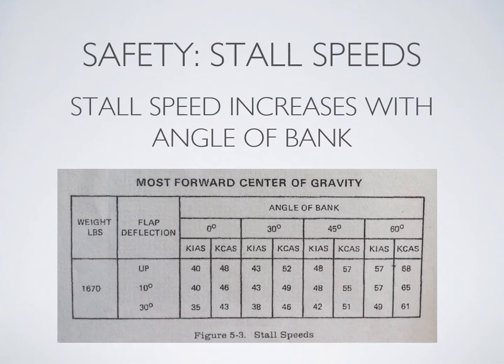Due to increased wing loading, your stall speed will increase disproportionately with your angle of bank. You can see this from the chart in the C152 POH — the stall speed increases by 3 knots in a 30-degree bank, but at a 60-degree bank angle, the stall speed is 40% higher than the level stall speed. For a more detailed review, see exercise 9 in the flight training manual.